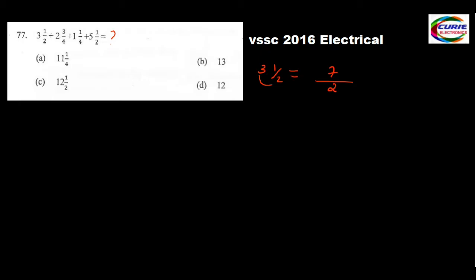What is the other number? 2 and 3/4. Similarly, write the denominator just like that, then multiply these two: 4 times 2 is 8, and 8 plus 3 is 11. So 2 and 3/4 becomes 11/4.